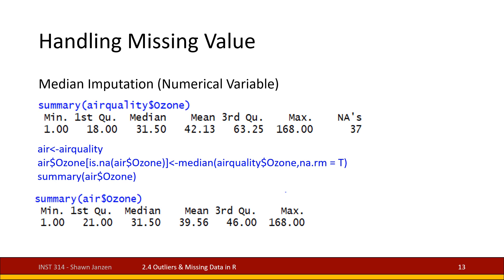For median imputation, we take the median value — the middle value. Running a summary on ozone tells us the median is 31.5. I copy airquality into a new variable called 'air', then take the median of the airquality ozone variable using na.rm = TRUE — that option says to ignore missing values when computing the median — and plug that median value into the air data frame's ozone variable wherever it's missing. When I run a summary on the new value, the median is 31.5 and everything looks good.